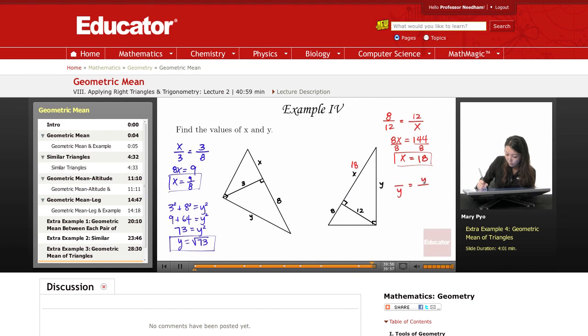So y, that's the geometric mean between the whole thing. 18 plus 8 is 26. That's the whole thing, right? This whole thing would be 26. And then this part that's close to it is 18. So then those are my extremes. And then my means would be this. So y squared is equal to, and you can just use your calculator for this part. So it's 26 times 18, which is 468. And then y is equal to square root of 468.